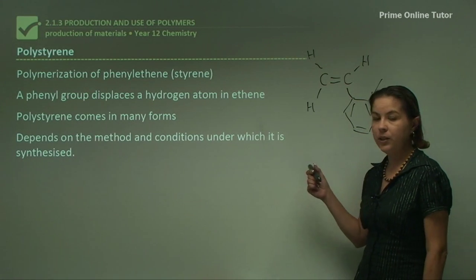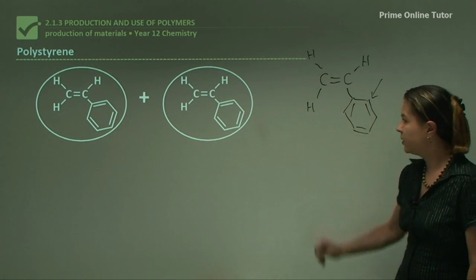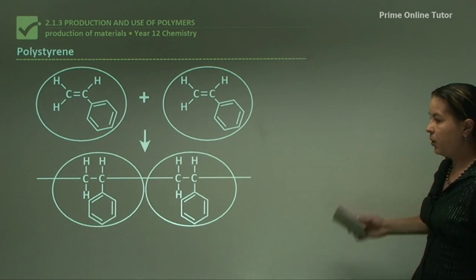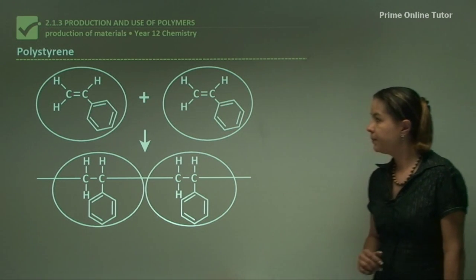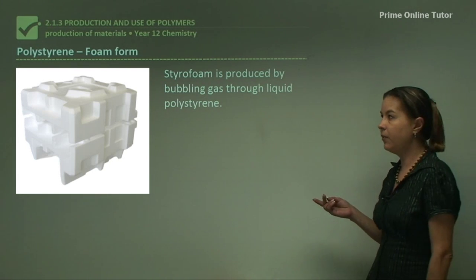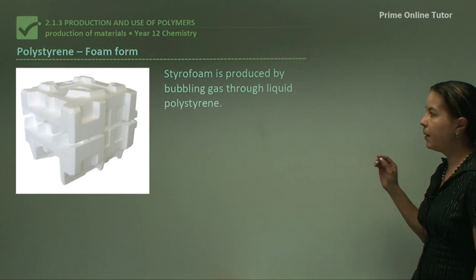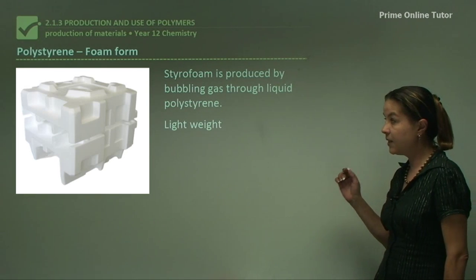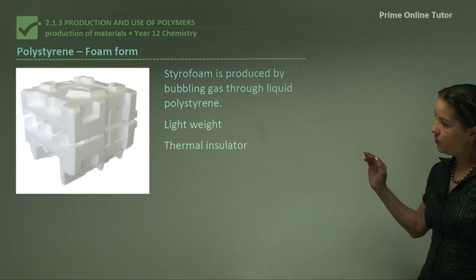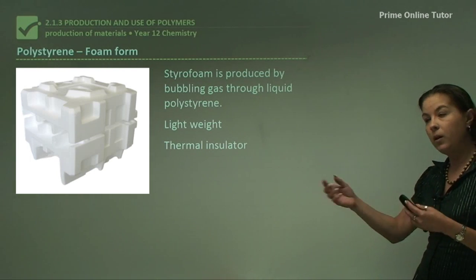It depends on the method and conditions under which it is synthesized as to what form it comes in. Two styrene molecules go together to polymerise to polystyrene. There are two types of polystyrene: the foam form and the crystalline form. The foam form we call styrofoam — you've seen it everywhere. It's produced by bubbling gas through liquid polystyrene. It's lightweight, it's a thermal insulator, and it's also used a lot in packaging to protect things from breaking while being sent.